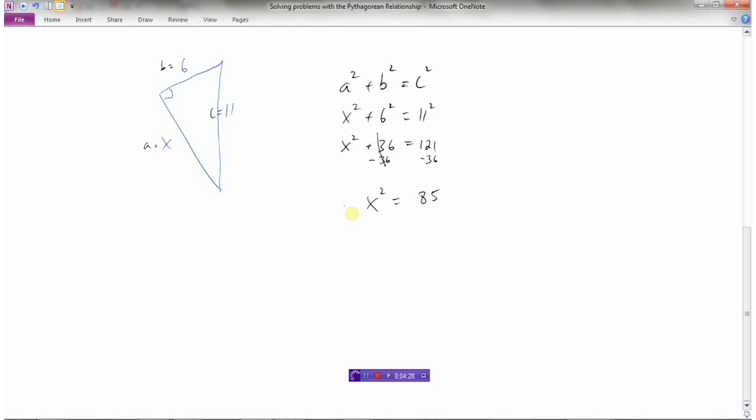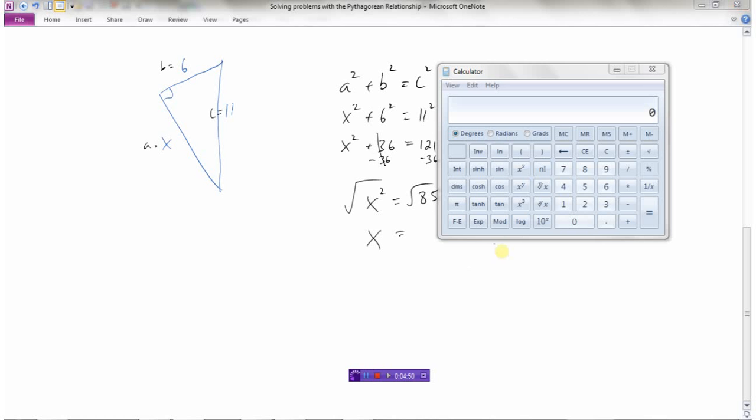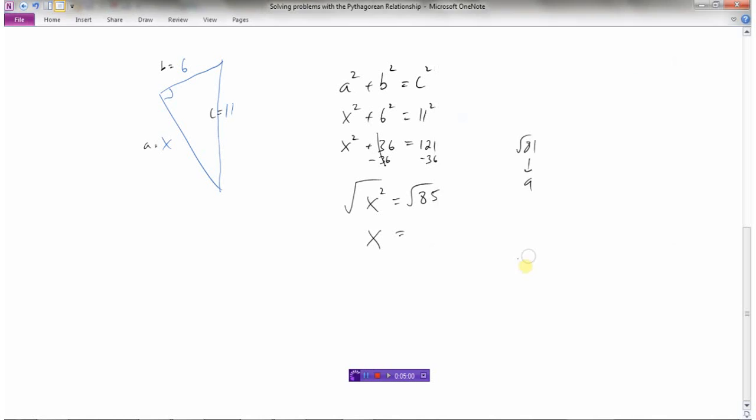And now I'm at the point where I'm ready to square root both sides, because I have X squared and I want to find out what X is. So the opposite of squaring is square rooting. And the square root of 85, I know the square root of 81 is 9. So this is going to be a little bit more than 9. Let's go to the calculator to find out. So the square root of 85 is 9.2. So X would be 9.2.